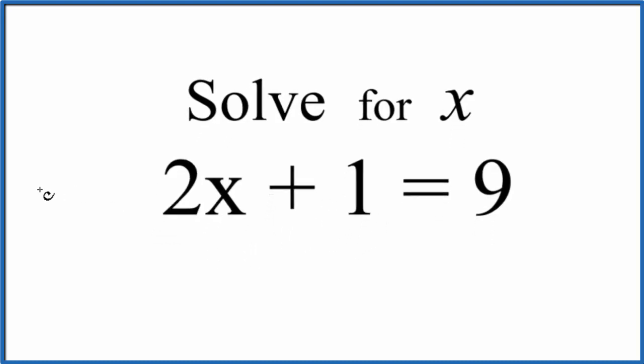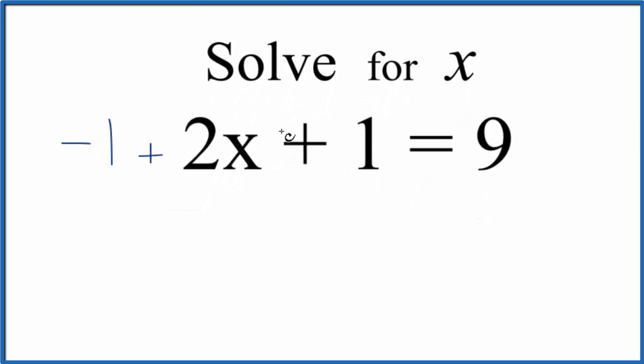So if we subtract 1 from each side, so we're going to add a negative 1 to each side, then the 1s would cancel out, and we'd be left with 2x equals 9 minus 1 is 8.